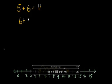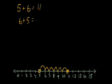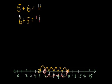Now, how do I write 6 plus 5? I will write 6 on the number line, then count on 5 more: 1, 2, 3, 4, 5. So, 6 plus 5 is equal to 11. Addition: 5 plus 6 equals 11, and 6 plus 5 also equals 11.